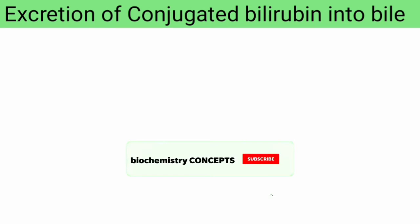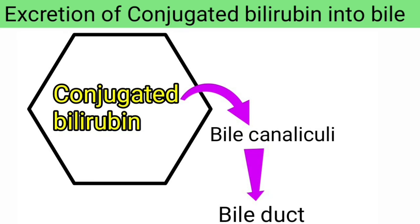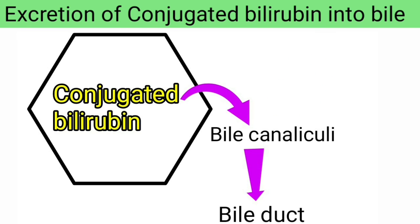Excretion of conjugated bilirubin into bile. Hepatocytes secrete the conjugated bilirubin into the bile canaliculi, from where it reaches the bile duct. This transport is an energy-dependent process. Bilirubin is transported against a high concentration gradient of bilirubin in the bile, making this step the rate-limiting step in bilirubin metabolism.